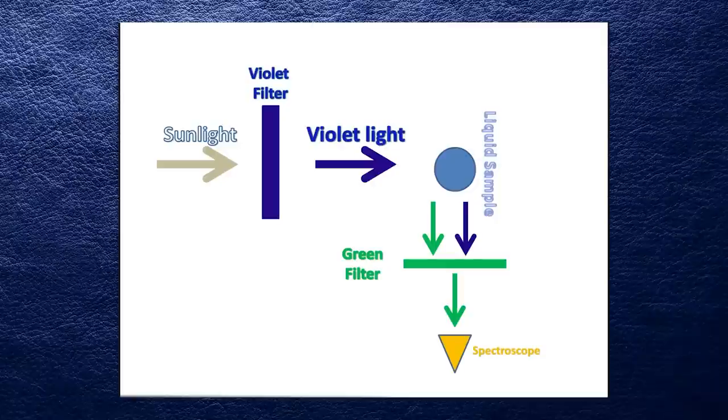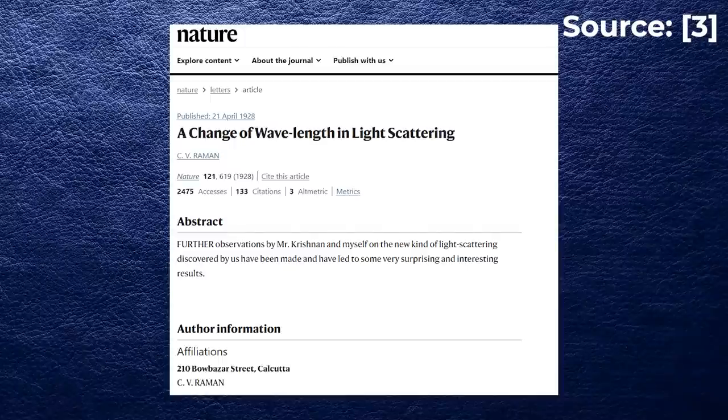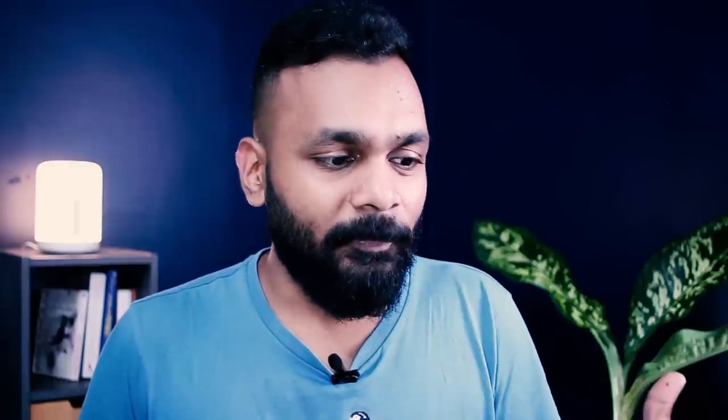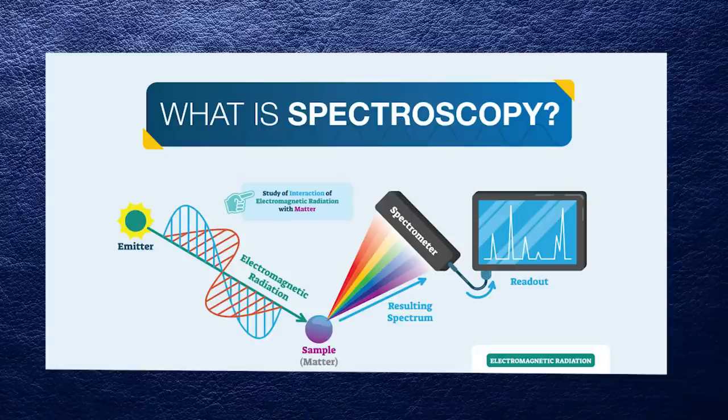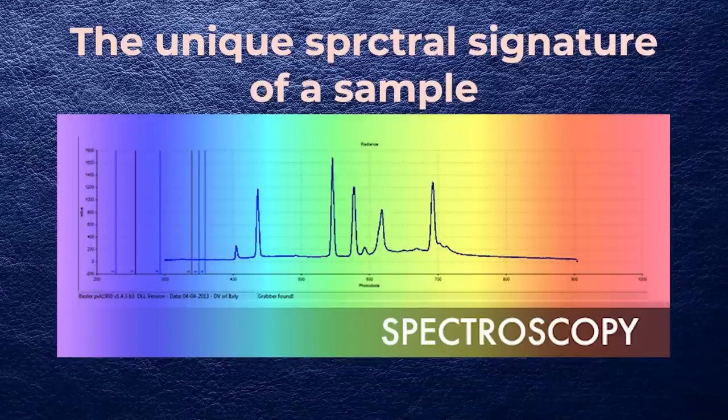Raman and Krishnan did this experiment in 1928, observed and measured the wavelengths of light going in and coming out of the sample, and published their results in the journal Nature in April that year. This was a pretty momentous discovery — according to Robert W. Wood at Johns Hopkins University, who reproduced their results, it was one of the most convincing proofs of quantum theory. In 1930, for his discovery, CV Raman was awarded the Nobel Prize. He made the discovery on the 28th of February 1928, and that day is observed in India as National Science Day.